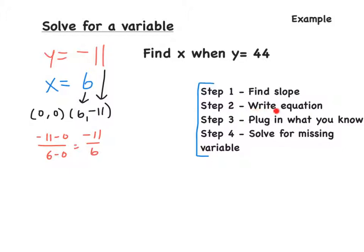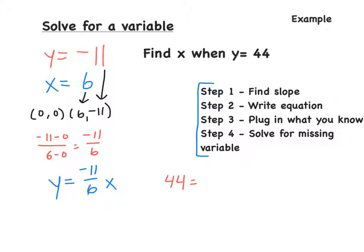Second step: write the equation. The direct variation equation is y equals negative 11 over 6 times x. Third step: plug in what you know. We are trying to find x when y is equal to 44. So we plug in 44 for y: 44 equals negative 11 over 6 times x.